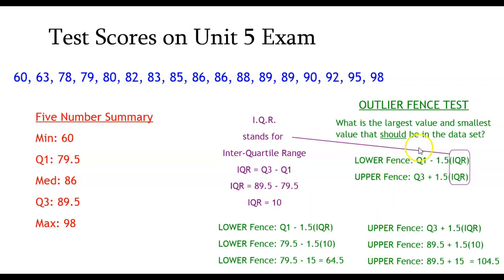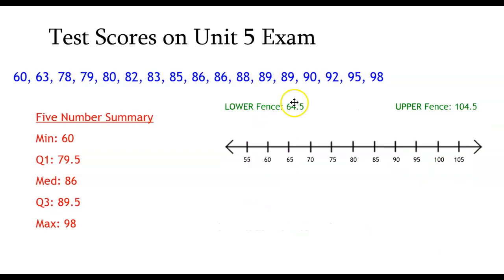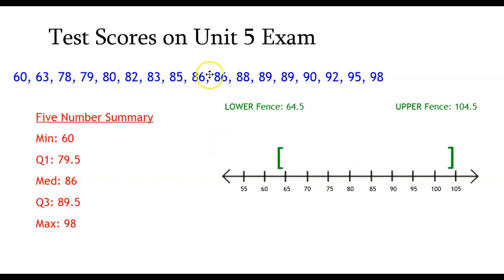Now that's going to tell us where the largest value and the smallest value should be in the data sets. In other words, there should be no values below 64.5 and there should be no values above 104.5. Let's take a look at what that looks like on the line graph. This tells us that there should be no values, as I said, below 64 and a half and no values above 104.5. Sometimes we try to visualize that as a series of brackets or fences. In other words, when I graph my data here, there should be nothing below this line, which is at 64 and a half and nothing above this line, which is at 104 and a half.